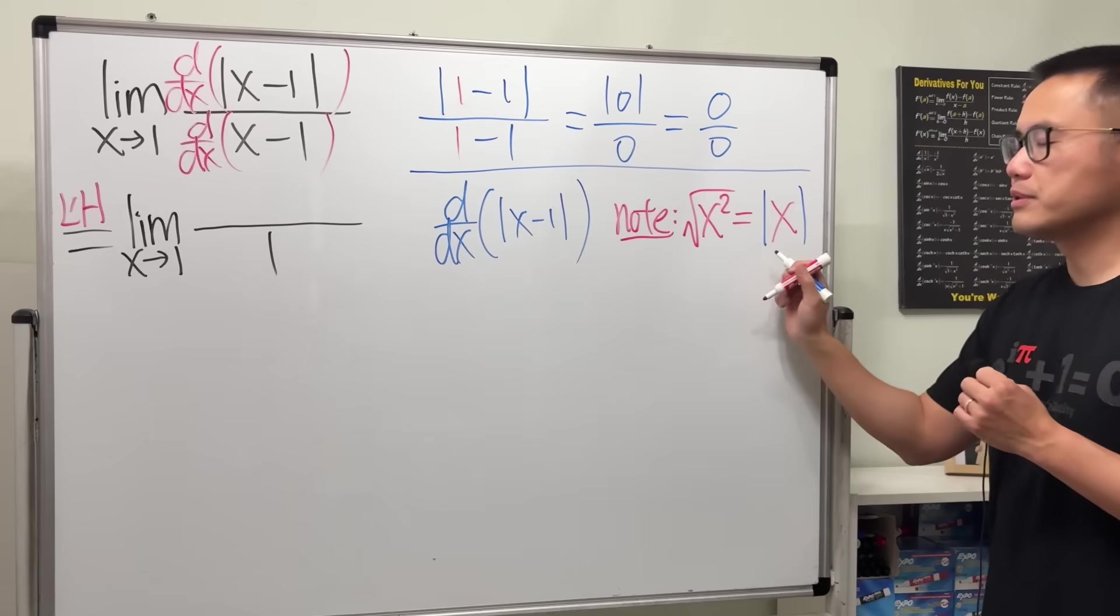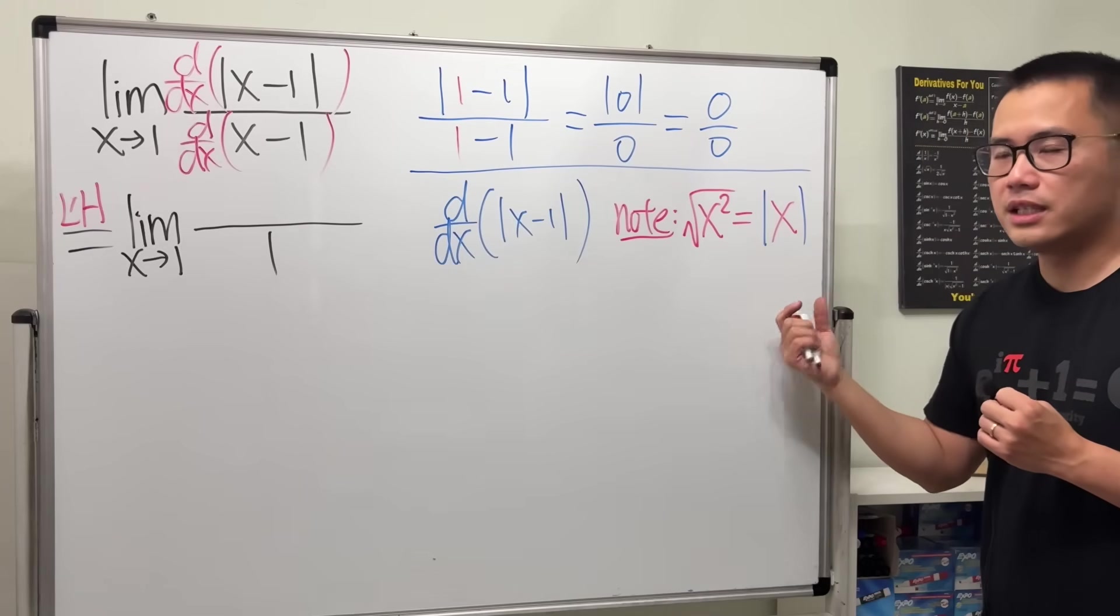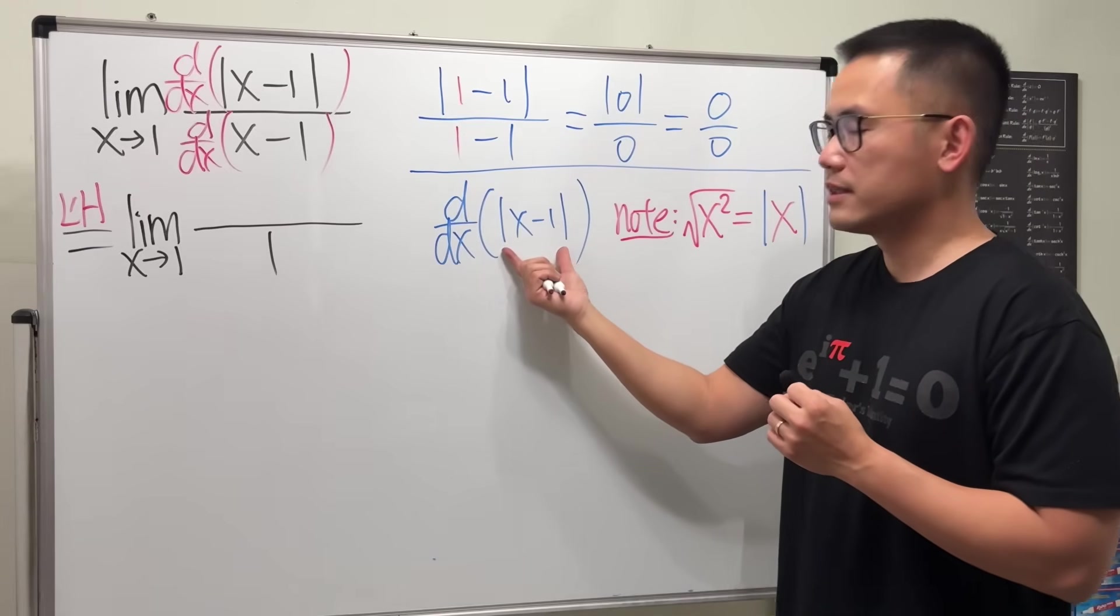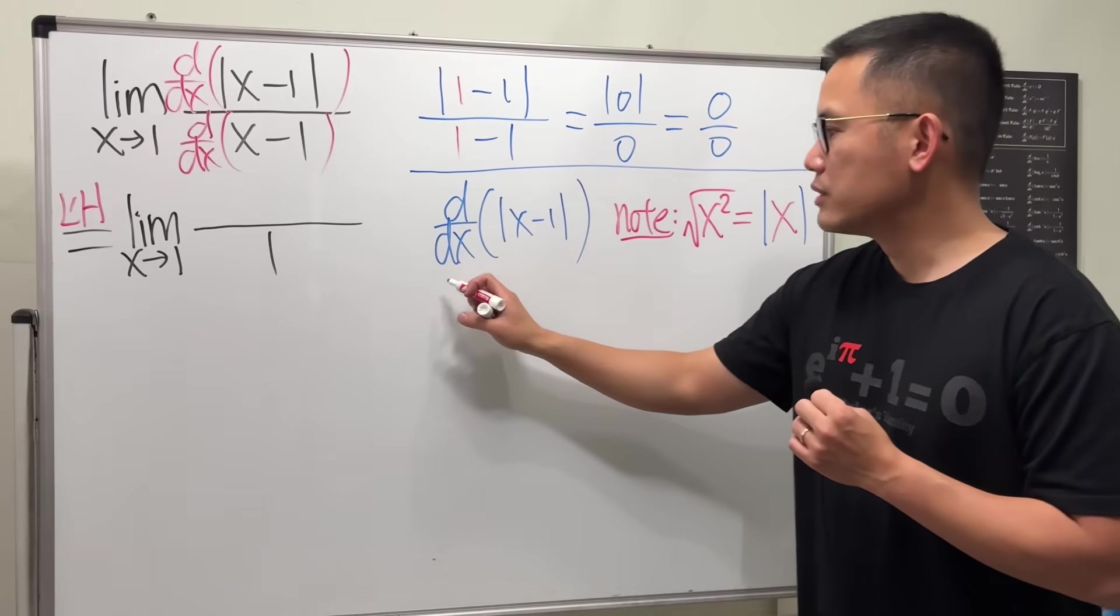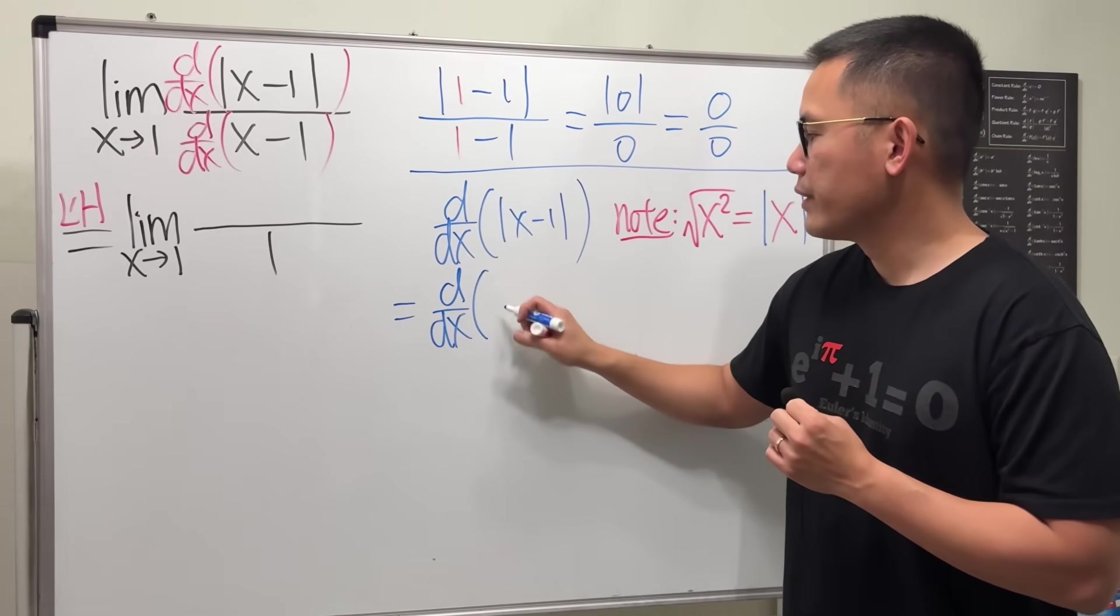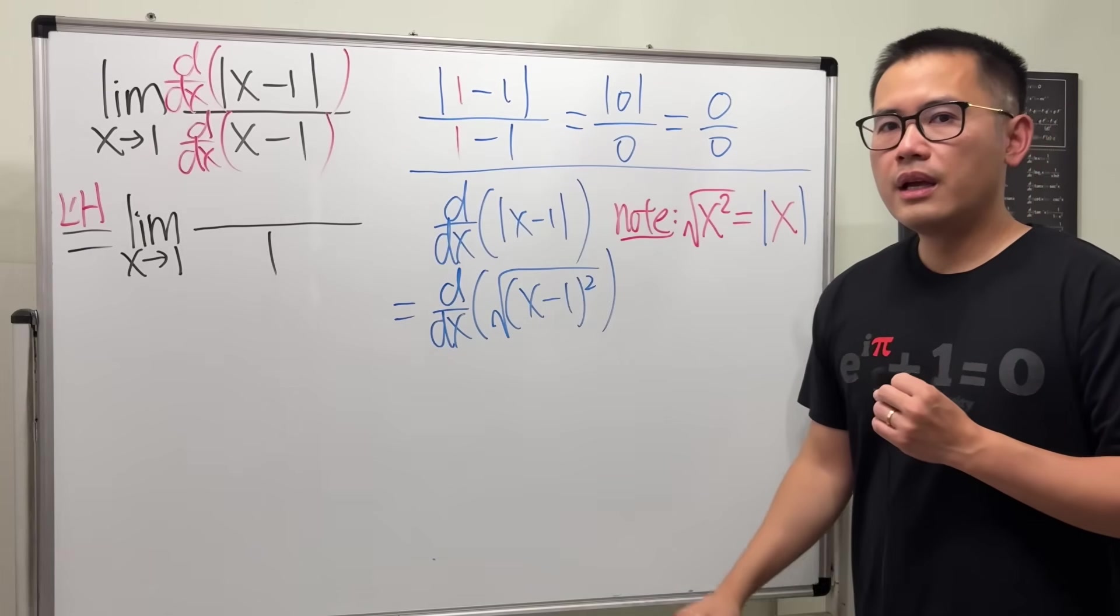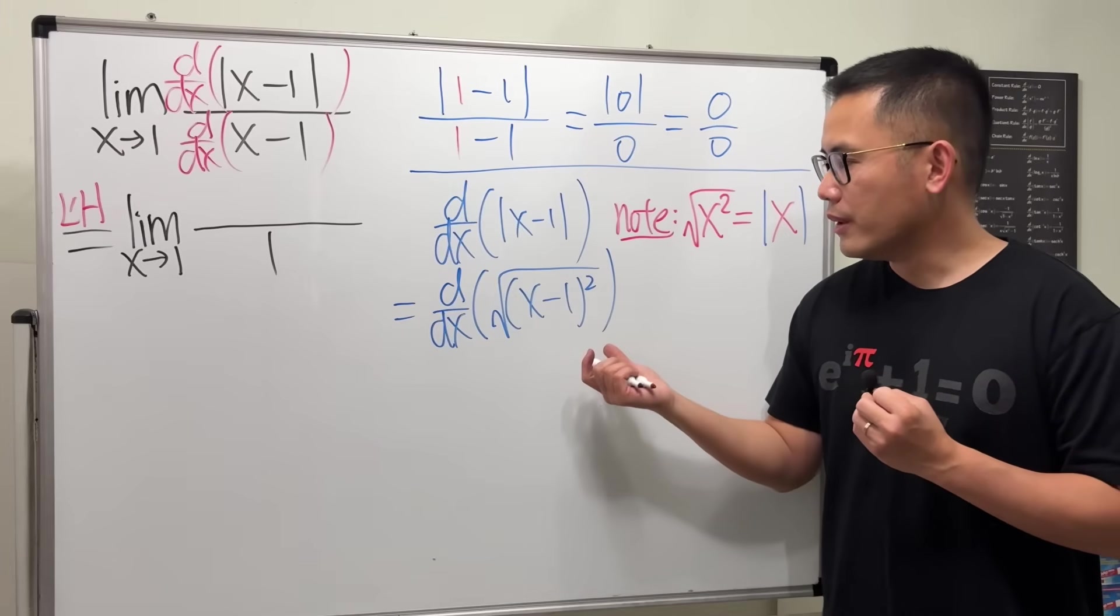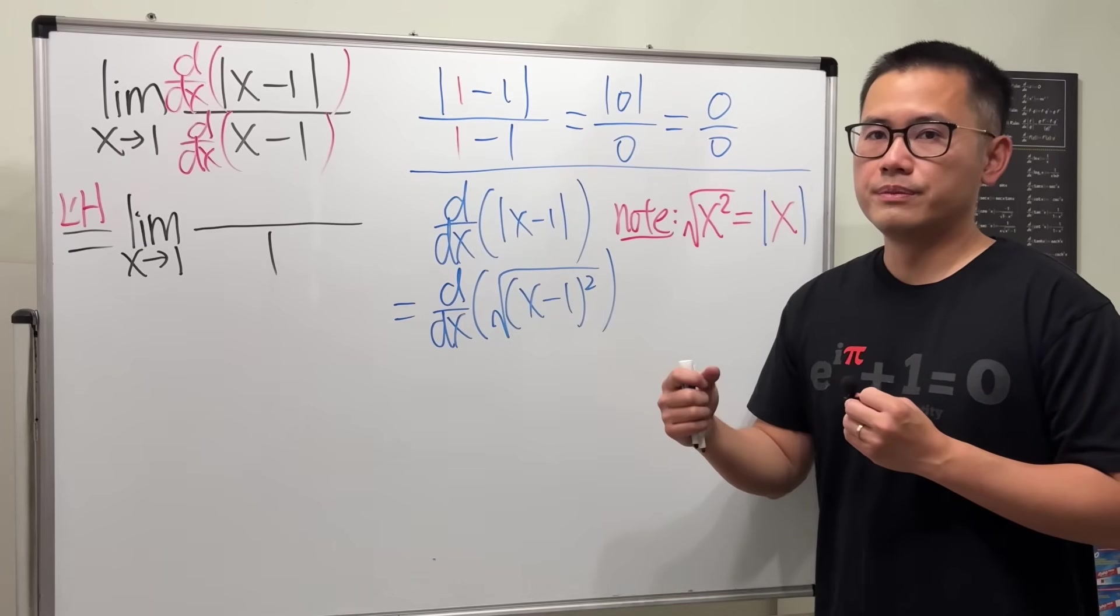Let's look at it backwards. When you have absolute value of x, let's square it and then put it inside a square root. So we can look at this as taking the derivative of square root of x minus 1 squared. The benefit of doing this is so that we can use the usual derivative techniques, power rule and also the chain rule.